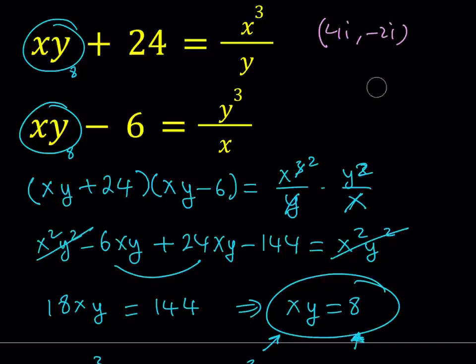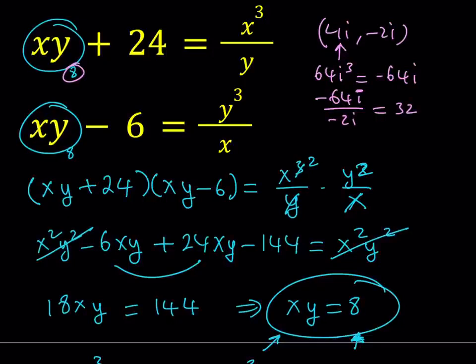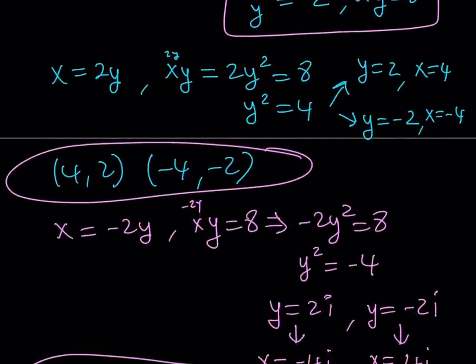If you go ahead and test it in one of the original equations, it doesn't really matter which one you use, but let's just go ahead and test the first one. x times y is going to be negative 8i squared, which is positive 8. Again, that's good. And on the right-hand side, you get x cubed from here. If you cube 4i, you will get 64i cubed. And i cubed, by the way, is negative i. So you can just replace it with negative 64i. And if you replace y with negative 2i, we're basically talking about negative 64i divided by negative 2i, and that should give you 32. And as you know, 8 plus 24 is 32, so that satisfies our equation, which is pretty good.